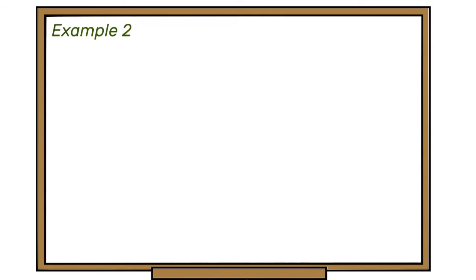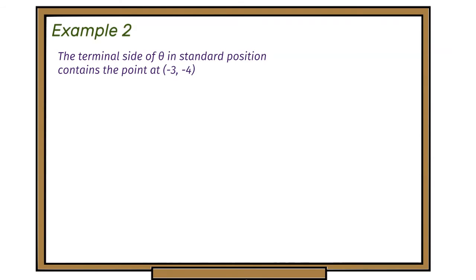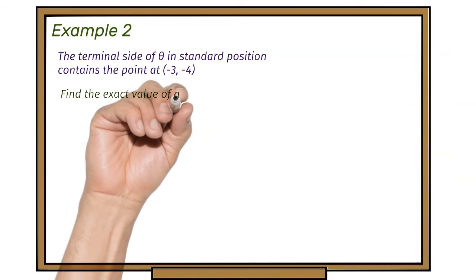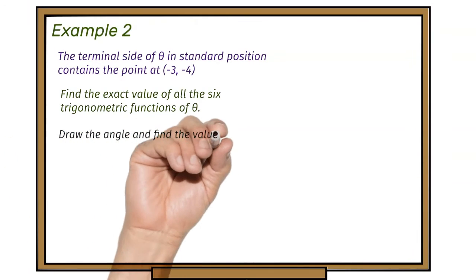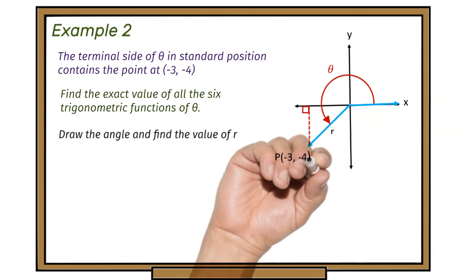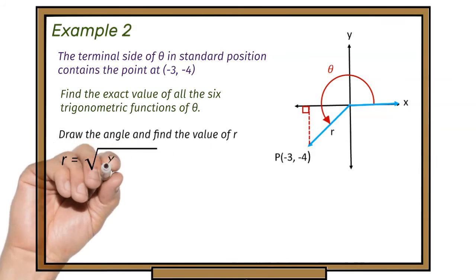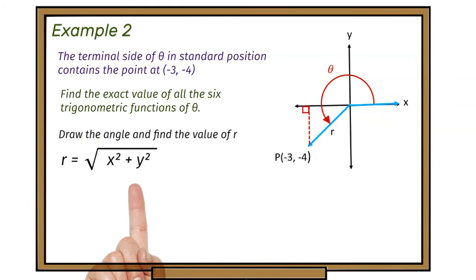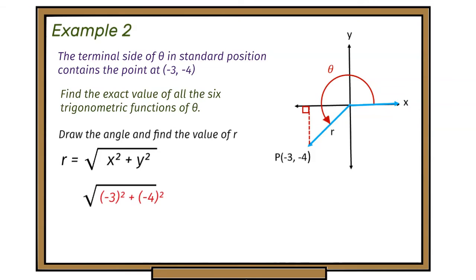Example two: the terminal side of theta in standard position contains the point at minus three, minus four. Find the exact value of all six trigonometric functions of theta. The point is in the third quadrant. We form our triangle and apply the Pythagorean theorem: r equals the square root of x squared plus y squared. Substituting x equals minus three and y equals minus four, we find r equals five.